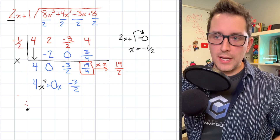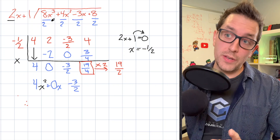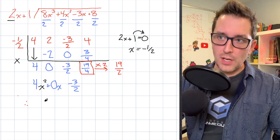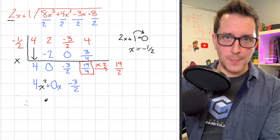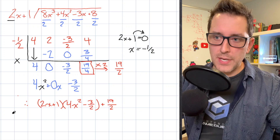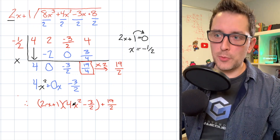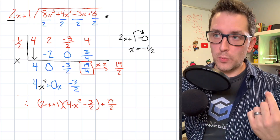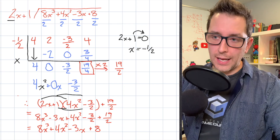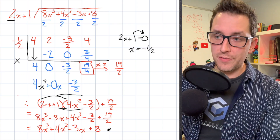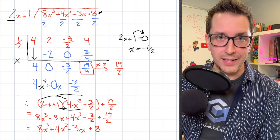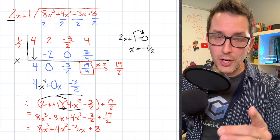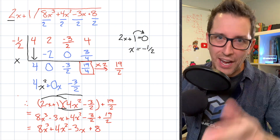To summarize: when we divide our cubic dividend by this divisor, we get this quotient with a remainder of 19 over 2. One way to express this is by writing an equivalent statement for our dividend — taking the divisor, multiplying by the quotient, and adding the remainder. When we expand, collect like terms, and simplify, we get our original dividend back, confirming everything is correct. This process is really similar to regular synthetic division, but you'll want to practice it.